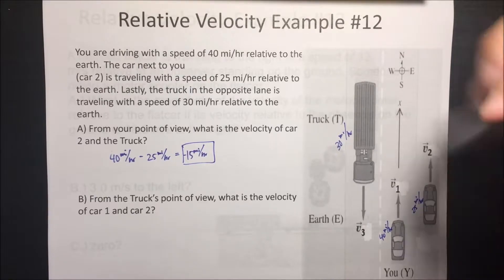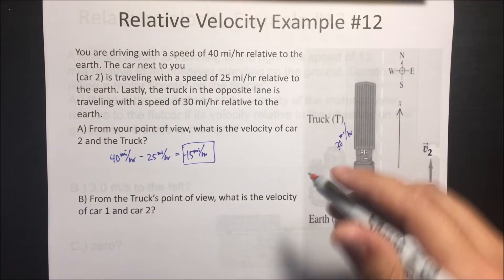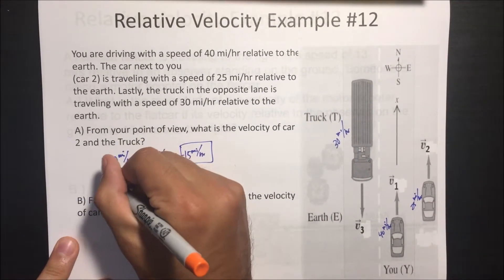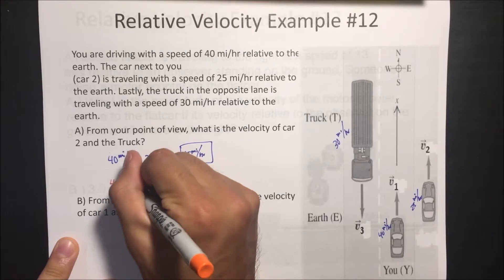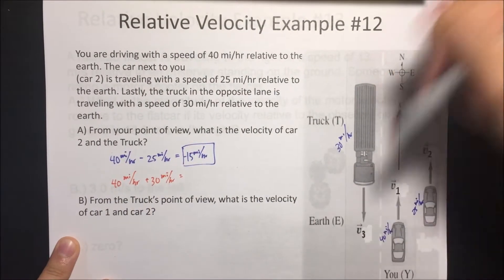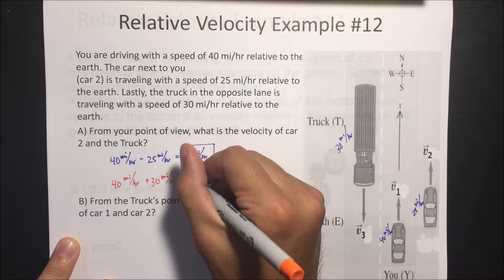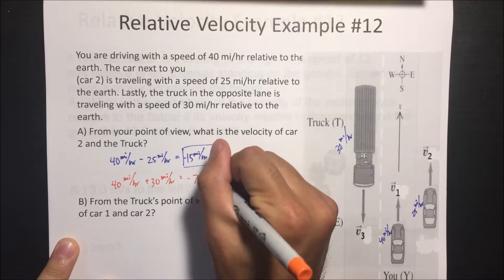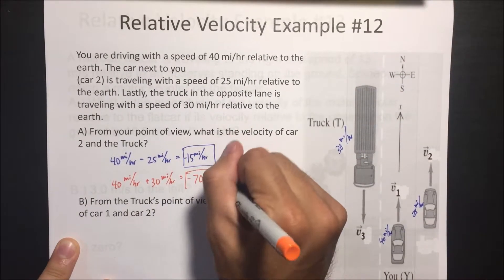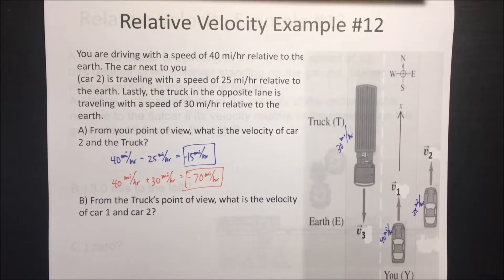For the truck, when two things are going towards each other it looks a lot faster, so you add: 40 miles an hour plus 30 miles an hour equals 70 miles an hour going south — so negative 70 miles an hour. And car two looks like it's going backwards at negative 15 miles an hour, which is south.